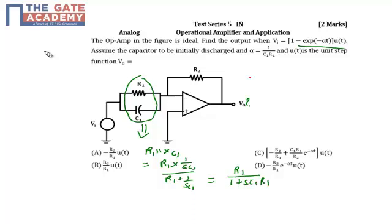Similarly, I can redraw this network by replacing the parallel RC combination R1 ∥ C1 with an equivalent impedance Z, whose value is R1 / (1 + sC1R1).